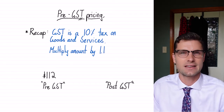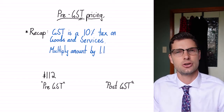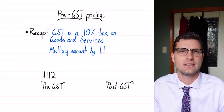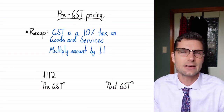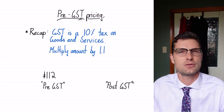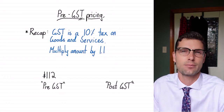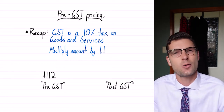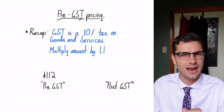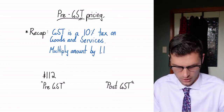Just to recap, the GST is the Goods and Services Tax, and it's a 10% tax that goes to the government on most things you get in Australia. The mathematics behind it is you just multiply the sale price or the selling price by 1.1, and that is what the total price is gonna be, and the government takes that 10%.